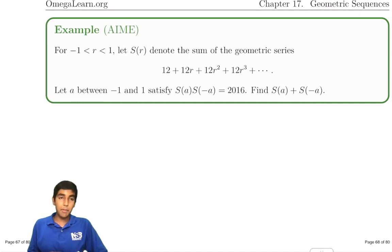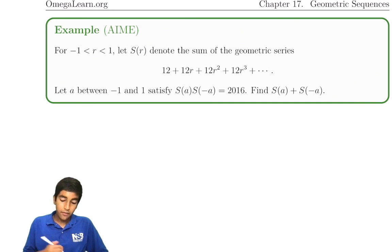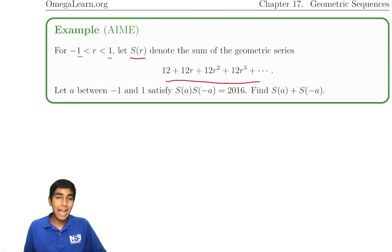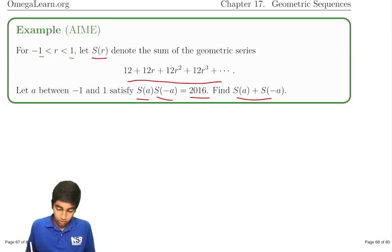Let's take a look at this problem from the 80s. For r from negative 1 to 1, let s of r denote the sum of the series. If a is between negative 1 and 1 and satisfy s of a times s of negative a equals 2016, find the sum of these two quantities. How do we do this?